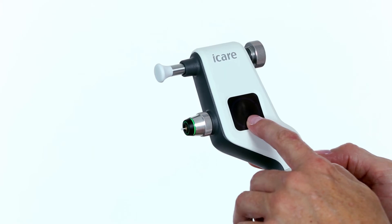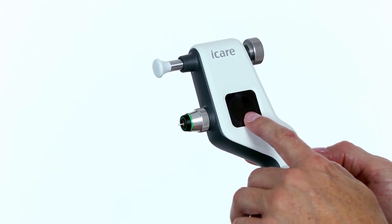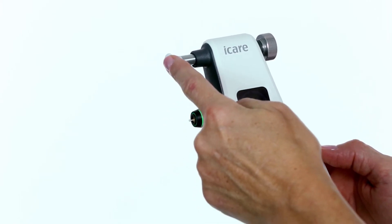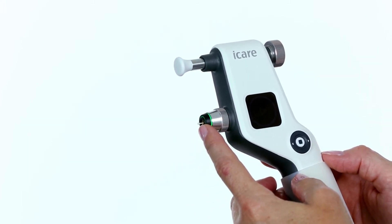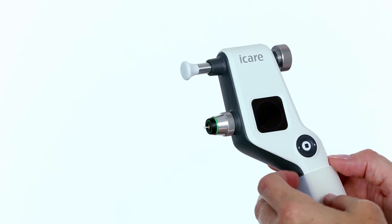The tonometer is ready to take a measurement when the blue play symbol appears on the display. Place the forehead support on the patient's forehead. Aim the probe in the center of the eye and the distance of the probe to the cornea should be 4 to 8 millimeters.